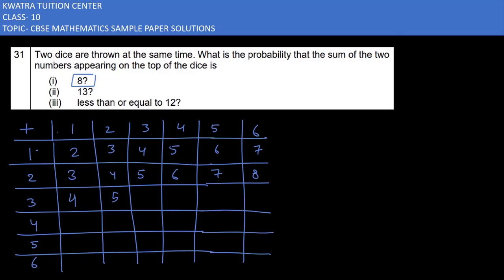3 plus 1 is 4, 3 plus 2 is 5, 3 plus 3 is 6, 3 plus 4 is 7, 3 plus 5 is 8, 3 plus 6 is 9. And 4 and 1 will be 5, 4 and 2 will be 6, 4 and 3 will be 7, 4 and 4 will be 8, 4 and 5 will be 9.